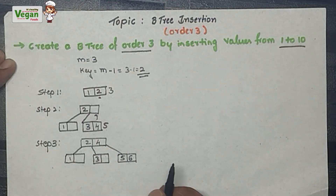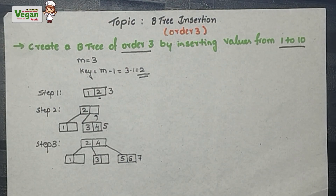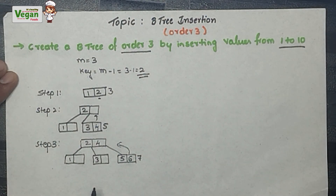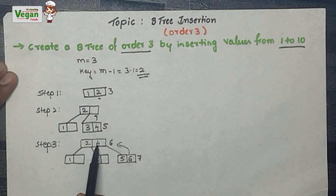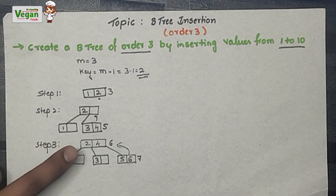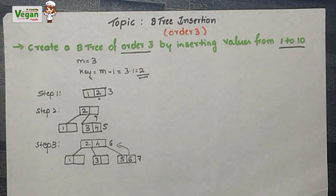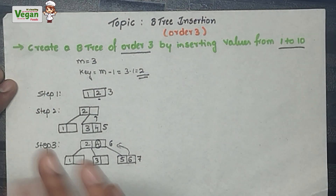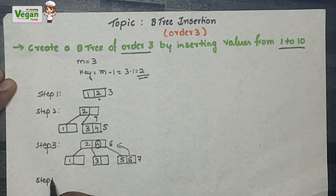Next I insert 6 and 7. There is no space for 7 because the maximum key value is 2. I take the median element one step back — 6 comes here. Now the root has 2, 4, and 6, which is 3 elements. The maximum keys a node can have is 2, so I take the median element, which is 4, and shift it one level upward.